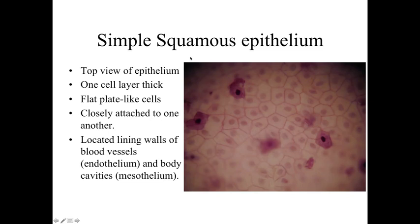Putting the two characteristics together — number of cell layers and shape of the surface cell — gives us our different classifications. A simple squamous epithelia has one cell layer thick, flat plate-like cells closely attached to one another. Looking down on top of it, we can see how these cells make contact with their neighbors. Simple squamous epithelium is found lining blood vessels — called endothelium — or lining body cavities — called mesothelium.